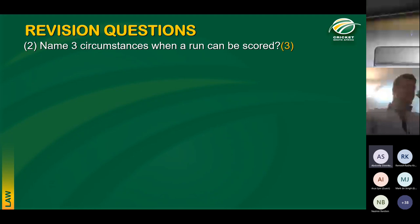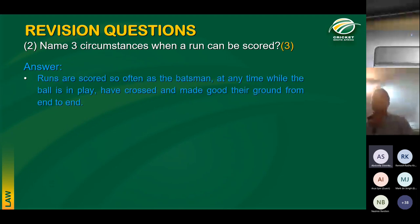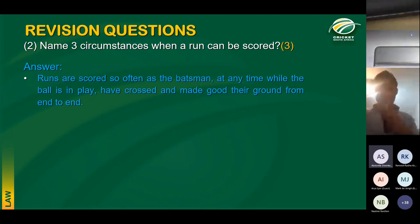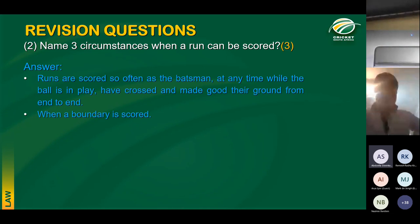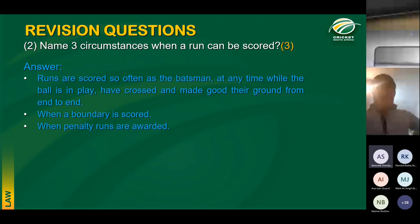The next question: name three instances when a run can be scored. Firstly, as often as the batters, while the ball is in play, have crossed and made good the ground from end to end. Runs can also be scored when either a boundary four or boundary six is scored. Lastly, runs can be scored when penalty runs are awarded.